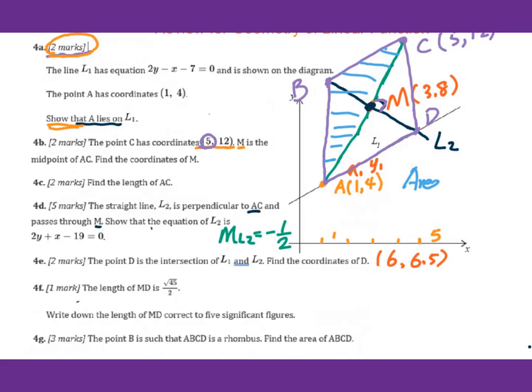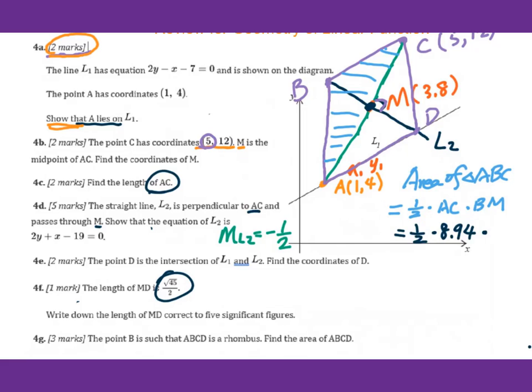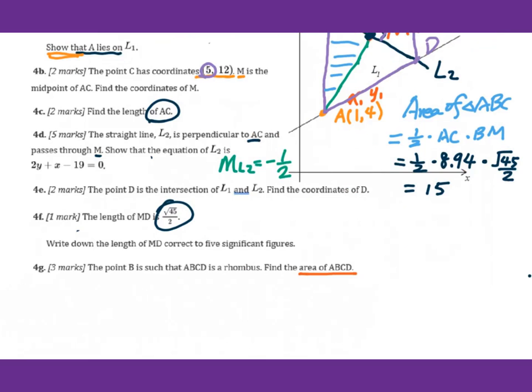So the area of triangle ABC equals 1/2 × base × height. Base will be AC times BM. The reason I choose ABC is because AC is given. We already figured that out: 1/2 × 8.94. BM will be MD, which is √(45/2) = 15. Therefore, the area of this rhombus will be 2 × 15 = 30.